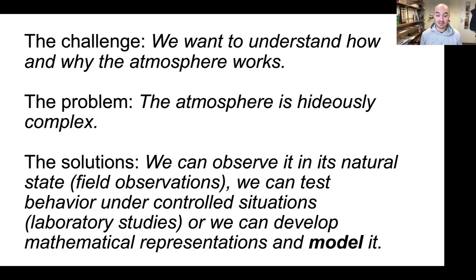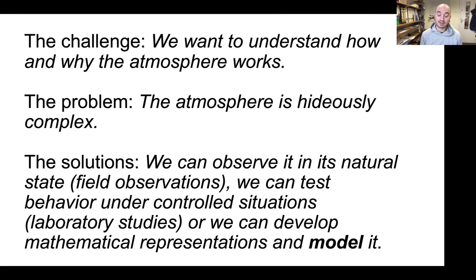The solutions are that we can observe the atmosphere in its natural state, making field observations. We can test the behavior of the system under controlled situations — primarily in the laboratory, where we know exactly what we're altering. We can observe how the concentration of ozone varies by changing concentrations of other species or temperature. Once we have enough fundamental knowledge of the physics and chemistry that occurs in the atmosphere, we can develop a mathematical representation of these processes. We call that a model.